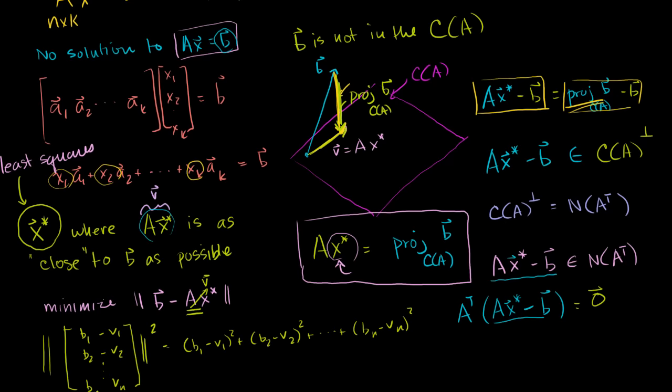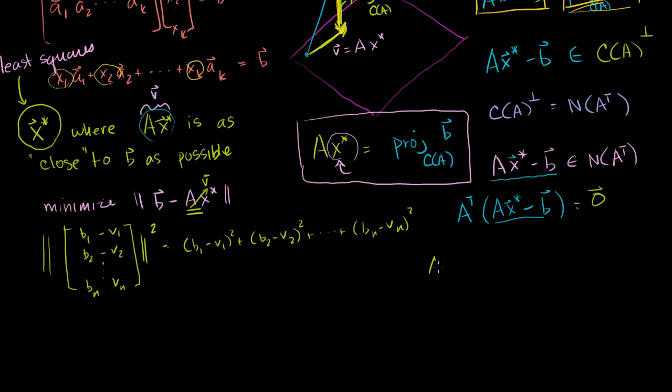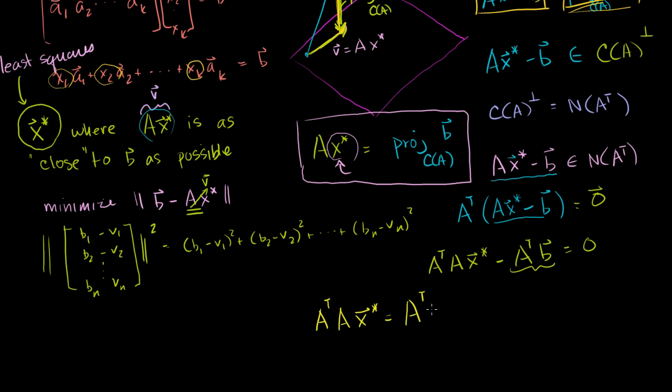Let's simplify: A transpose times Ax star minus A transpose times b equals 0. Adding A transpose b to both sides, we get A transpose A times x star equals A transpose b. That's what we get.